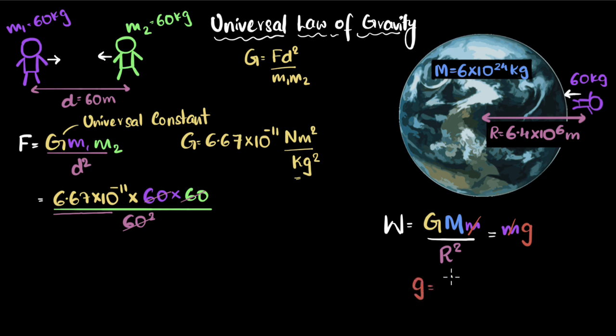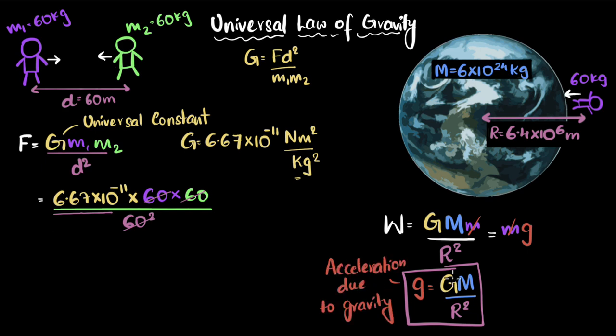g happens to be capital G times M divided by R squared. This g is what we call the acceleration due to gravity. And if you plug in these numbers for g for earth, you get the value to be 9.8 meters per second squared.